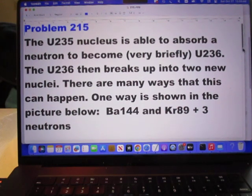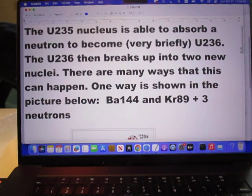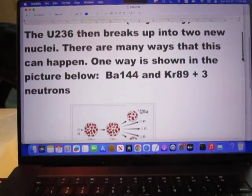Problem 215. The uranium-235 nucleus is able to absorb a neutron to become very briefly uranium-236. The uranium-236 then breaks up into two new nuclei. There are many ways that this can happen.